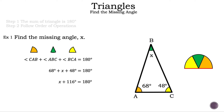Now we have X plus 116 degrees is equal to 180 degrees. Since we are solving for X, we need to move that plus 116 degrees to the other side, and the inverse of plus is subtraction. So we're going to subtract 116 degrees on the left-hand side. Those numbers cancel. Since we did it to the left-hand side, we now need to do it to the right-hand side: 180 degrees minus 116 degrees, and the result of that is 64 degrees. So the missing angle, or X, is 64 degrees.